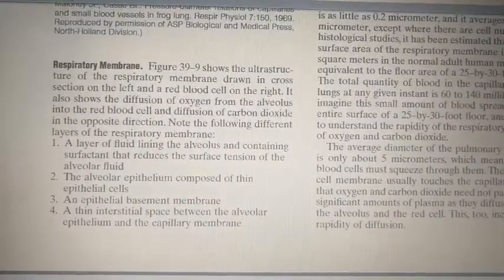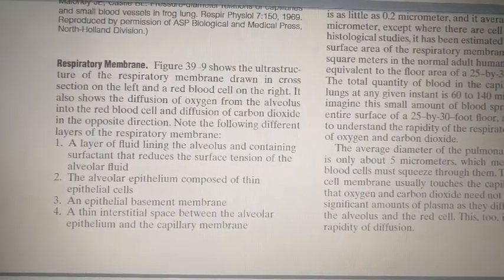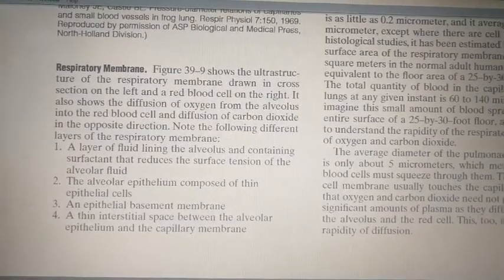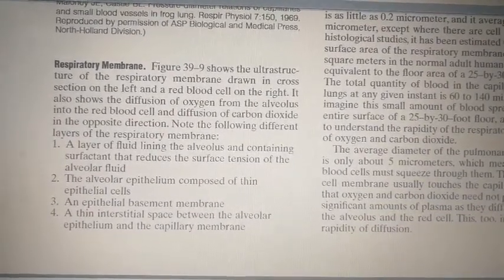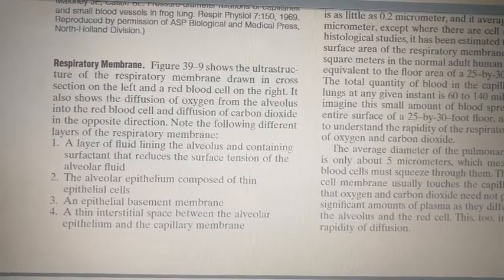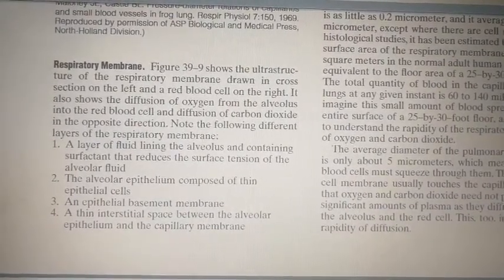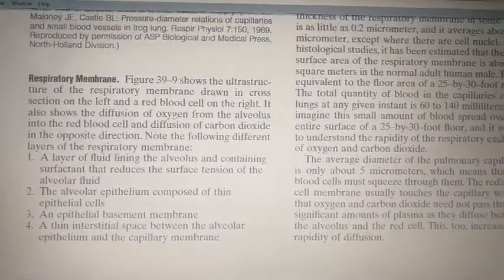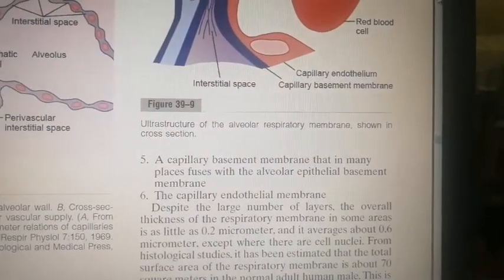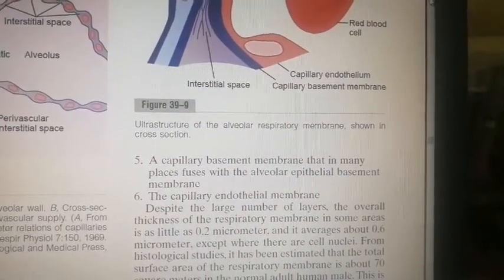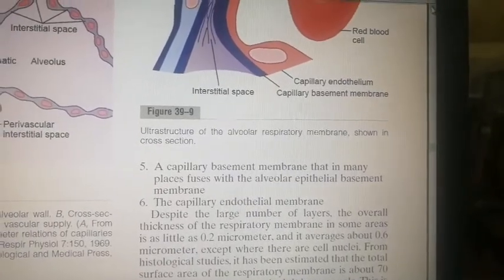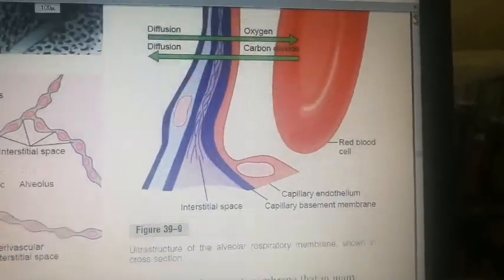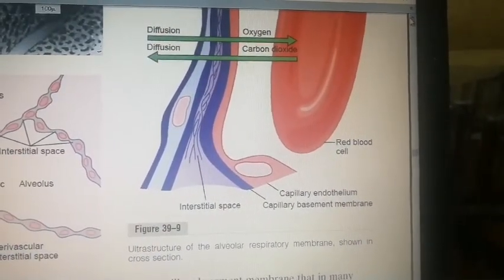The respiratory membrane consists of: a layer of fluid lining the alveolus containing surfactant that reduces surface tension of the alveolar fluid; the alveolar epithelium; the epithelial basement membrane; a thin interstitial space between the alveolar epithelium and capillary membrane; the capillary basement membrane; and the capillary endothelium — shown in red. These are the six layers.